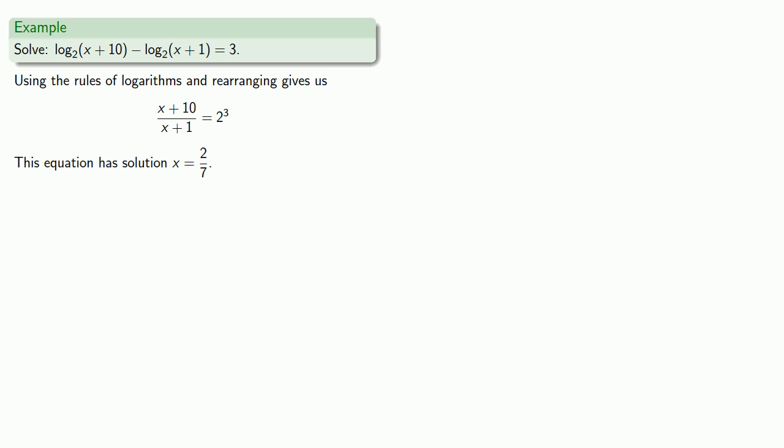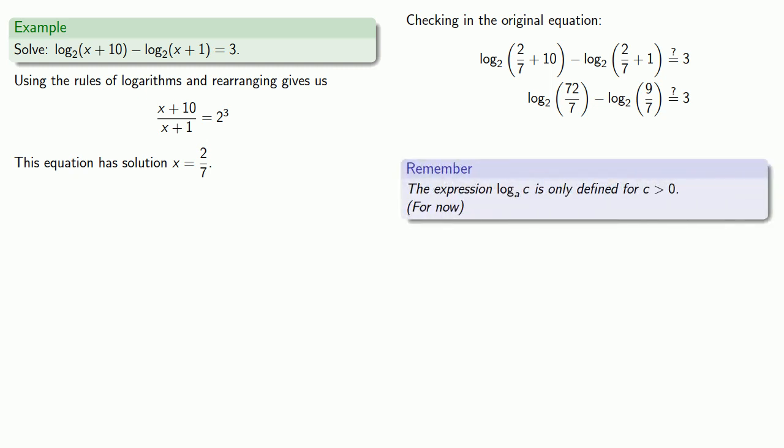And again, we should check in the original equation. We'll substitute in what we think our solution is. Now one problem is that we can't calculate logs directly. So we'll have to use our rules of logs. But before we do that, we have to keep in mind one very important idea. Log to base a of c is only defined for positive values of c, which means that whatever we're taking the log of here has to be positive. If it isn't, then our solution automatically fails and is not actually a solution.